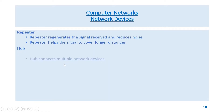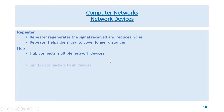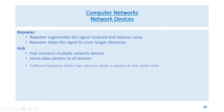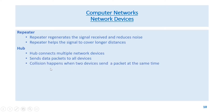A hub connects multiple network devices and sends data packets to all devices. Collision happens when two devices send a packet at the same time. It can be used with both digital and analog data.